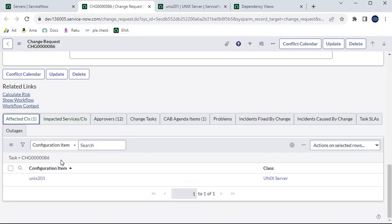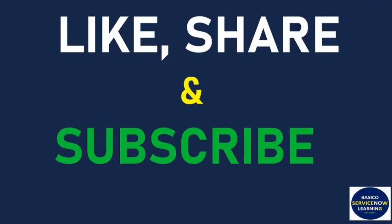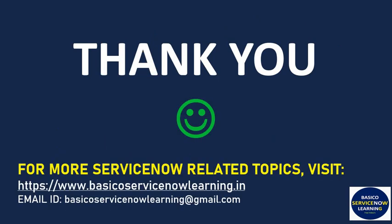To summarize: Affected CI — the CI where some changes have to be done. Impacted CI — the CIs which are directly, indirectly, or partially affected by the CI they are dependent on in any way. I hope the difference between both CIs is now clear. If you got the required information, please like, share, and subscribe. Thank you, have a nice day, bye bye.